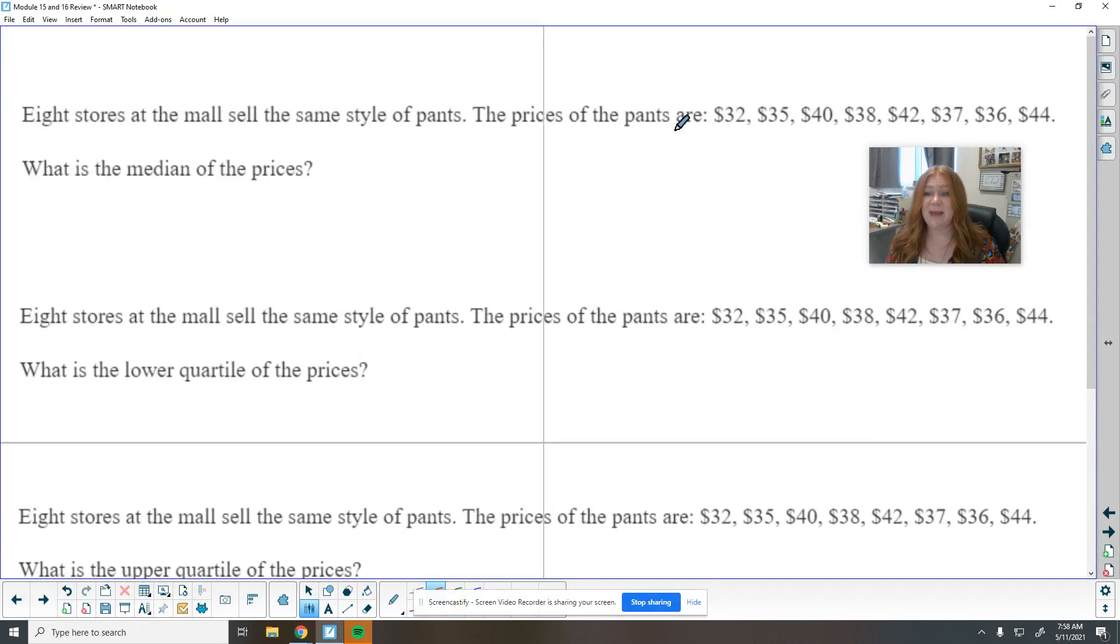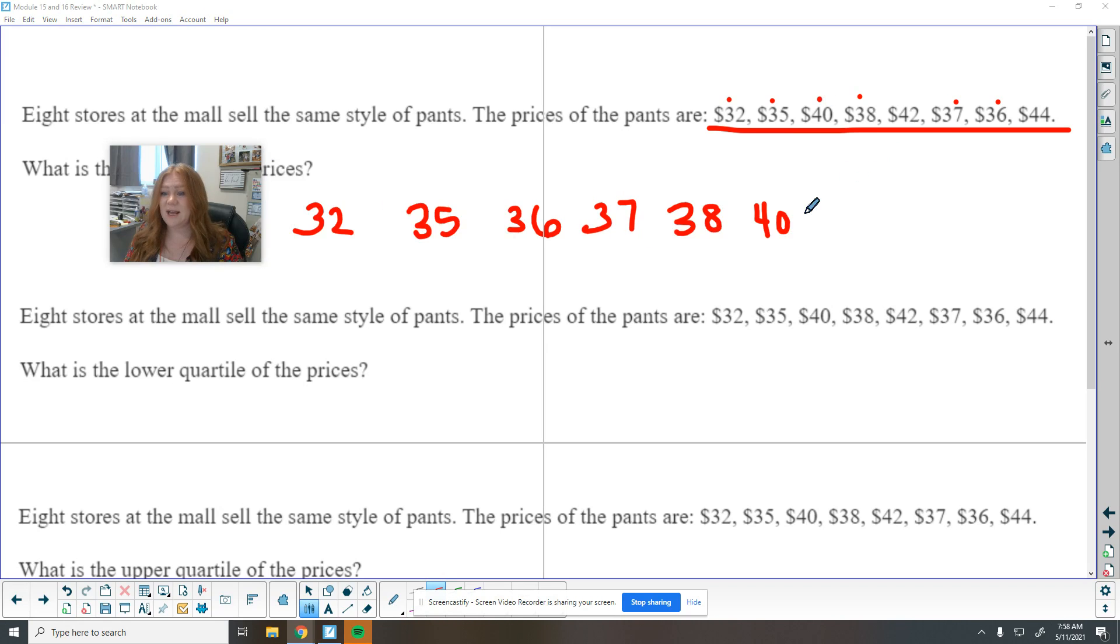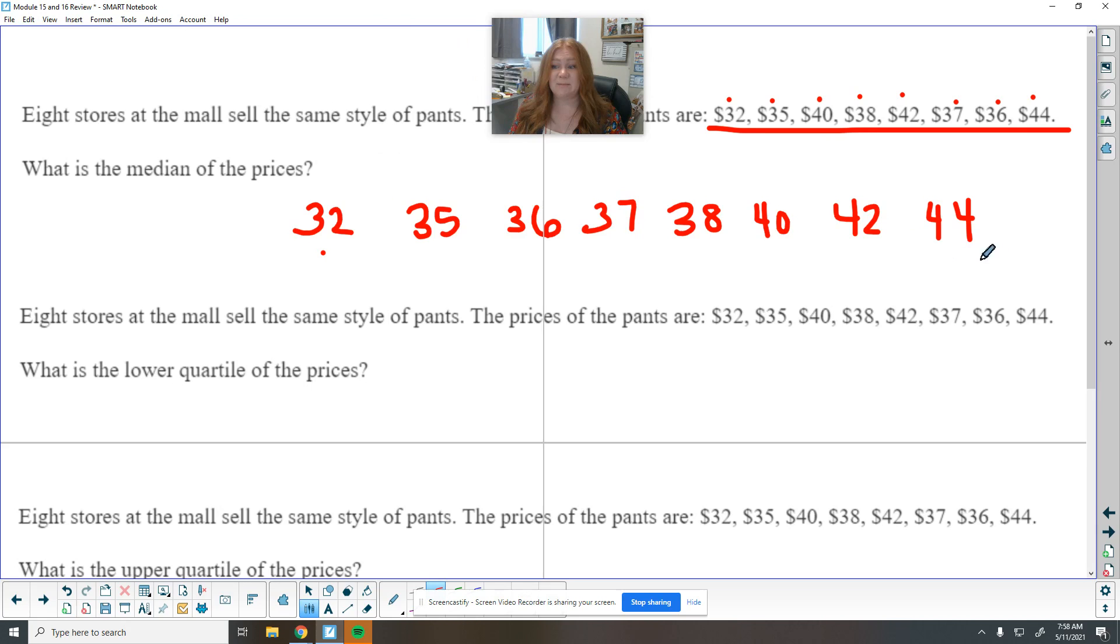Hey, eight stores at the mall sell the same style of pants for these different prices. What is the median? So we want to go ahead and put those in order. 32, 35, 36, 37, 38. And then we've got 40, 42 and 44. So if they have my size in stock, I'm definitely going to want to go to this cheapest store here. So they're the same exact pants. So find our median is finding that middle number. And we've got two in the middle here. So the middle of that is $37.50. So the pants are around $37.50 at any given store.